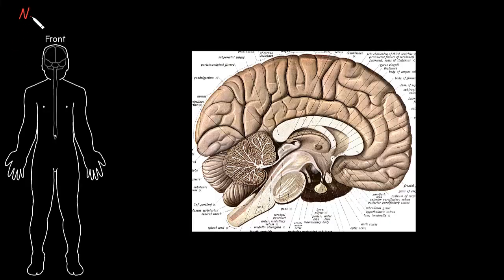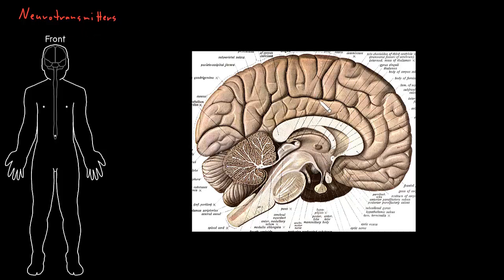In this video I want to introduce some of the anatomy involved in neurotransmitters. Recall that neurotransmitters are molecules that communicate between neurons and their target cells at chemical synapses. Some neurotransmitters are released by neurons distributed widely throughout the nervous system, while others are more specific to certain areas.